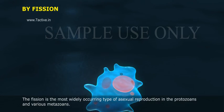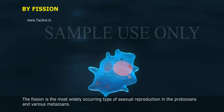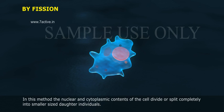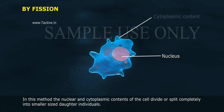Fission is the most widely occurring type of asexual reproduction in protozoans and various metazoans. In this method, the nuclear and cytoplasmic contents of the cell divide or split completely into smaller sized daughter individuals.